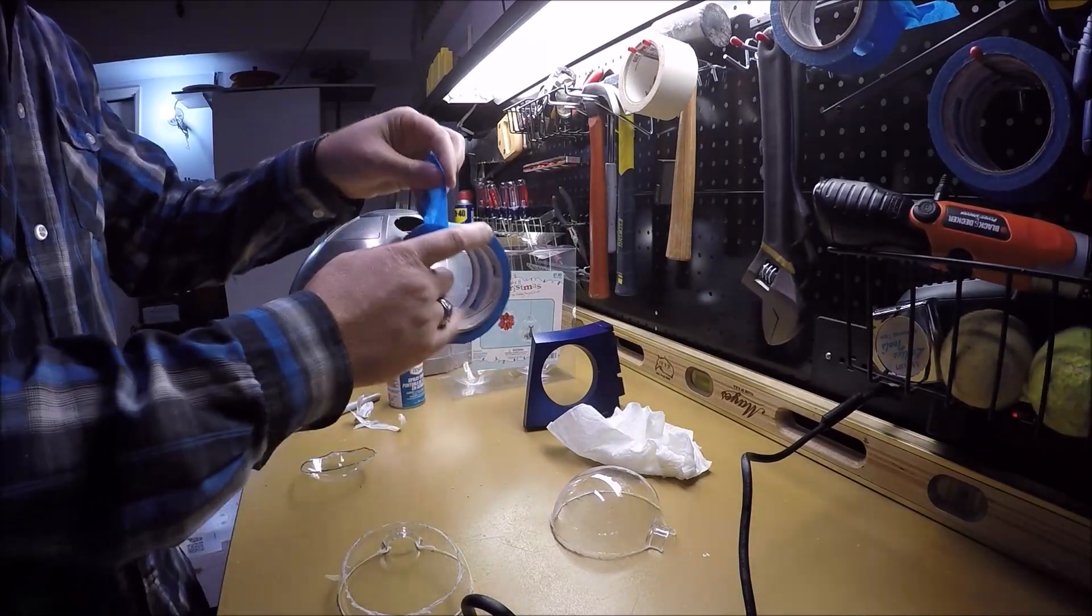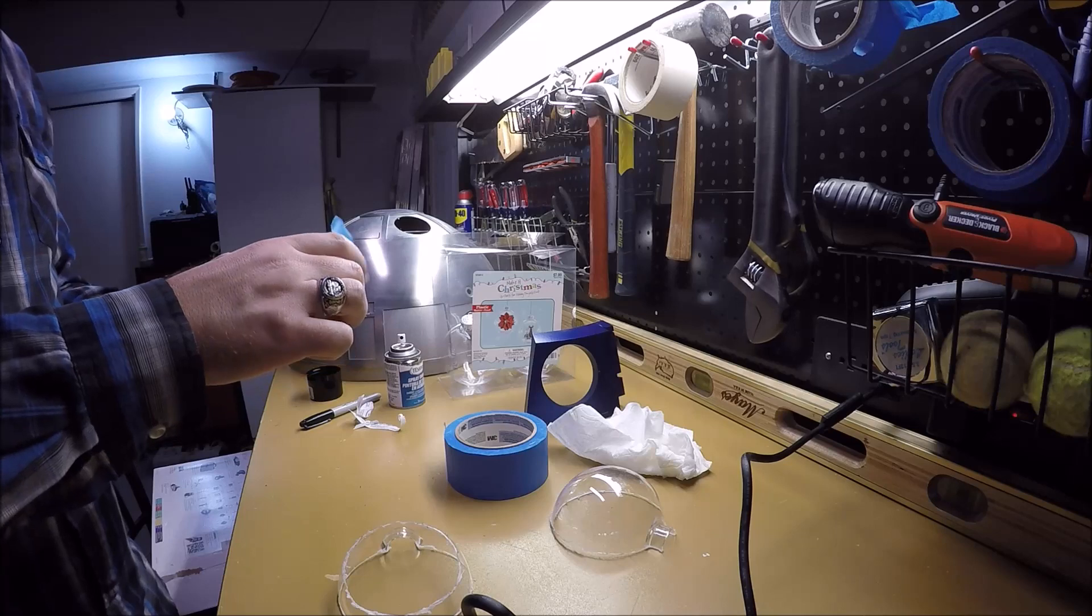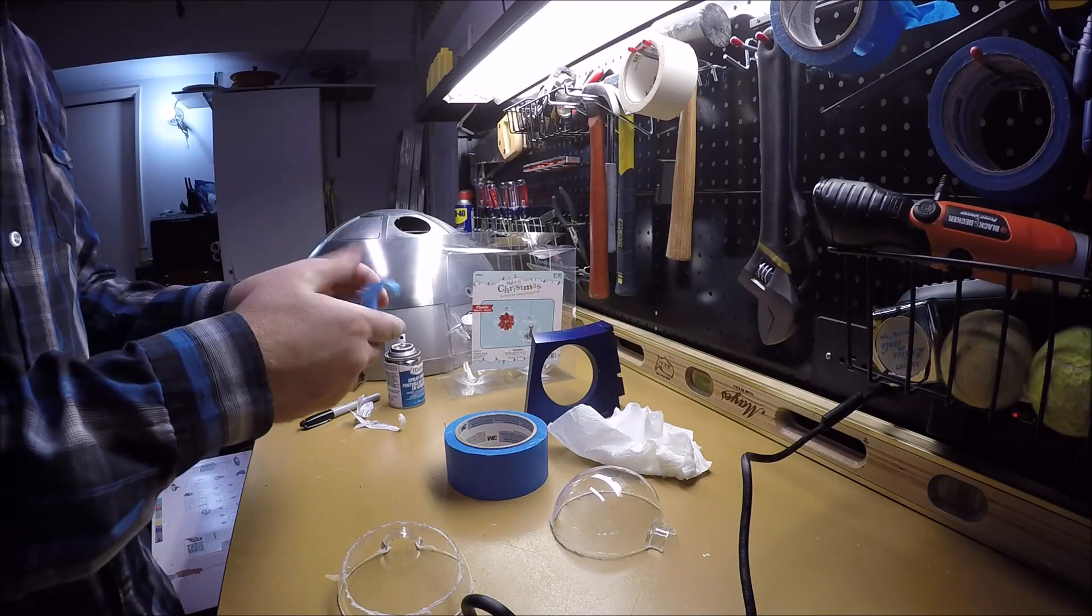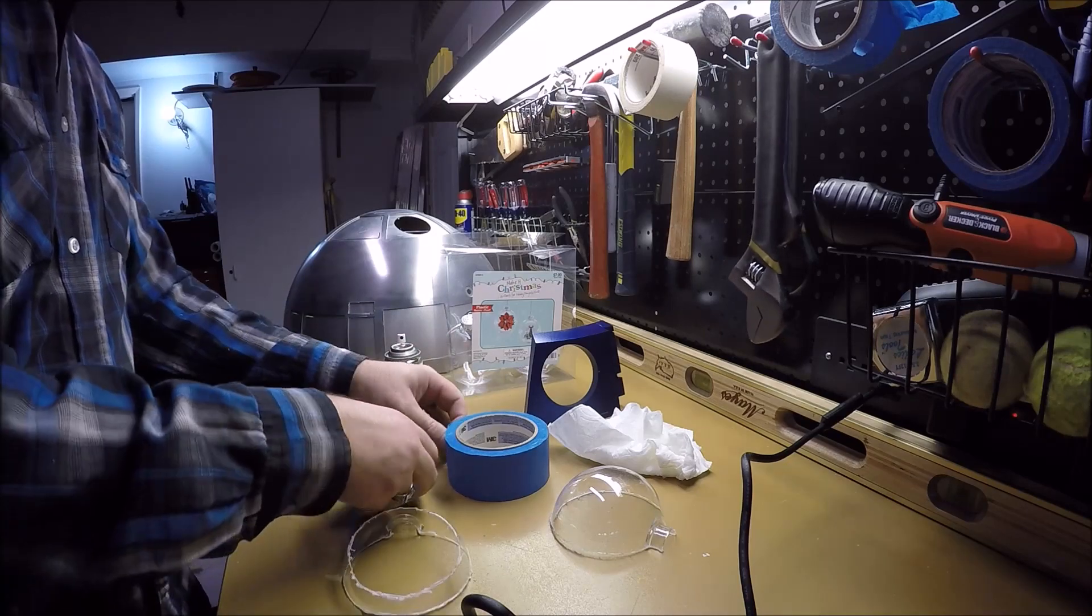For this part, you are going to be adding the blue tape to the outside of the radar eye. This is going to allow you to paint the inside the black color while leaving the shiny look of plastic on the outside, allowing the eye to look authentic.